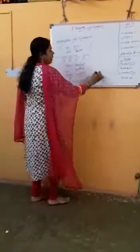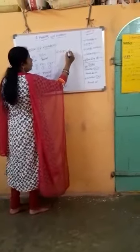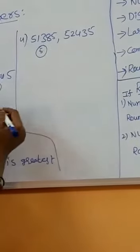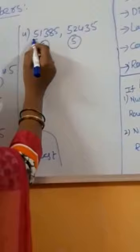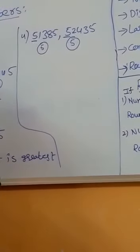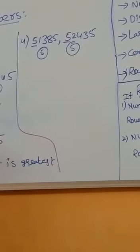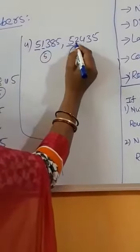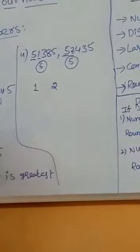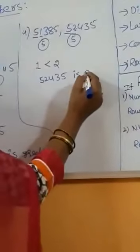Let's take another example to compare. Here also, we count digits first — both numbers have 5 digits. Next, we compare place values. In the 10,000 place, both numbers have 5. So we move to the next place — the 1,000 place. In one number the 1,000 place is 1, and in the other it is 2. Since 1 is less than 2, the number 52435 is the greatest number.